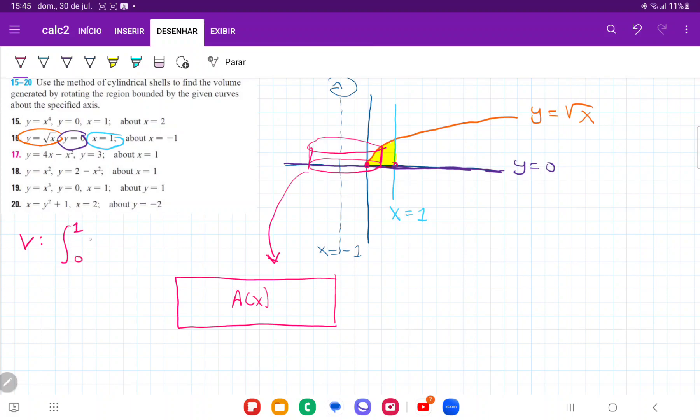So from 0 to 1 of all these areas of these cylinders. So A(x) dx. So when we sum up all these areas, we are going to get a volume.